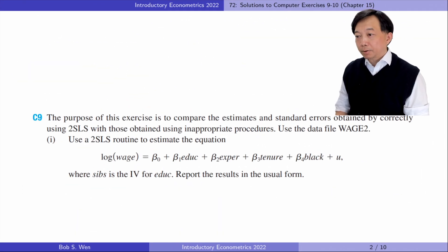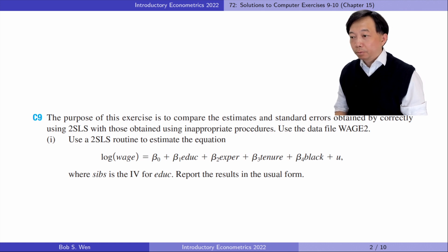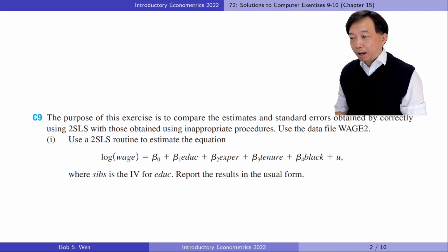Let's look at exercise 9. The purpose of this exercise is to compare the estimates and standard errors obtained by correctly using two-stage least squares with those obtained using inappropriate procedures. In part 1, we use a two-stage least squares routine to estimate the equation, where siblings is the IV for education. Report the results in the usual form.